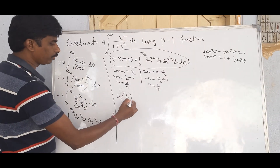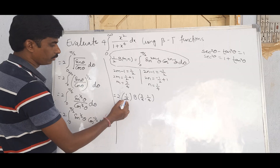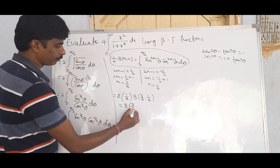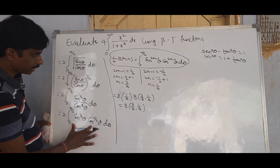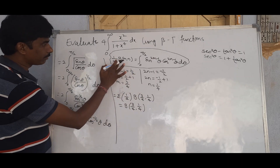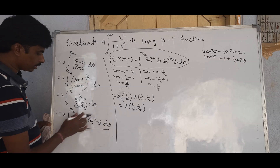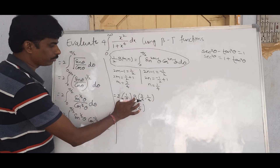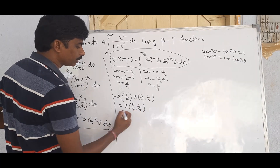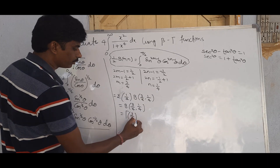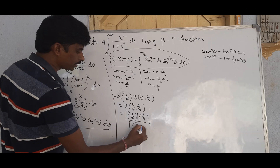So the result is β(3/4, 1/4). Applying the beta-gamma relation β(m, n) = Γ(m)·Γ(n) / Γ(m+n), we get Γ(3/4)·Γ(1/4) / Γ(3/4 + 1/4) = Γ(3/4)·Γ(1/4) / Γ(1).